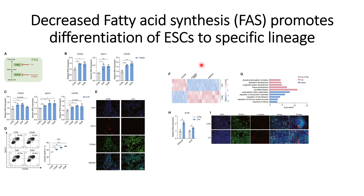The germ layer is the primary stage for development of a particular organ — the stage at which cell lines committed towards a specific lineage are formed. Here we will understand the effect of fatty acid synthesis on embryonic stem cells. They used two inhibitors to prevent fatty acid synthesis: the first one is TOFA, which prevents acetyl-CoA from converting into malonyl-CoA, and the second one is C75, which prevents malonyl-CoA from converting into fatty acids.